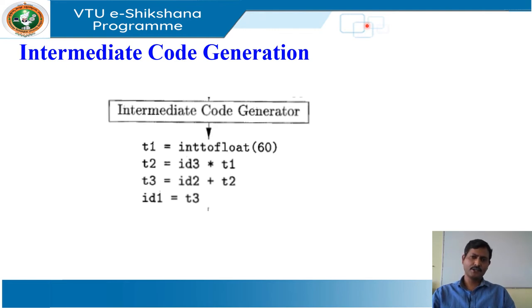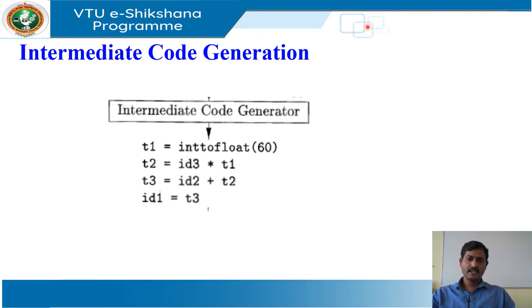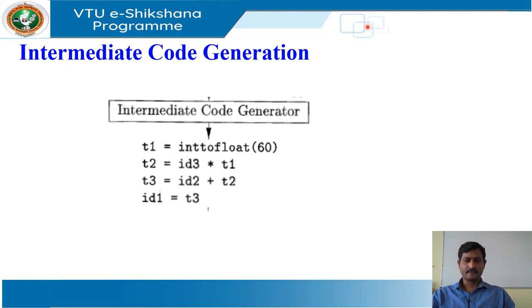This intermediate representation should have two important properties: it should be easy to produce, and it should be easy to translate into the target machine. We consider an intermediate form called three-address code, which consists of a sequence of assembly-like instructions with three operands per instruction. Each operand can act like a register. The output of the intermediate code generator in the figure consists of the three-address code sequence.